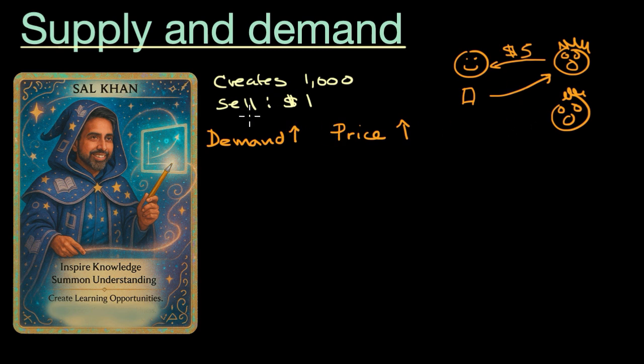Now, what we're seeing here is something called scarcity. And let me write that word down. Some of you might have heard it before. When something is scarce, that means there's not enough of it to go around.